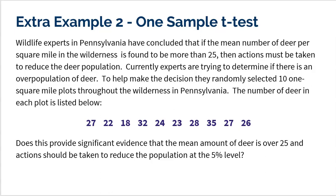All right, so to help make the decision, they randomly select 10 one-square-mile plots throughout their wilderness in Pennsylvania. The number of deer in each plot is listed below. Does this provide significant evidence that the mean amount of deer is over 25 and action should be taken to reduce the population at the 5% level?